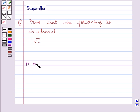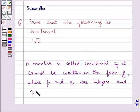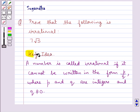We know that a number is called irrational if it cannot be written in the form p upon q, where p and q are integers and q not equal to 0. This is the key idea for this question.